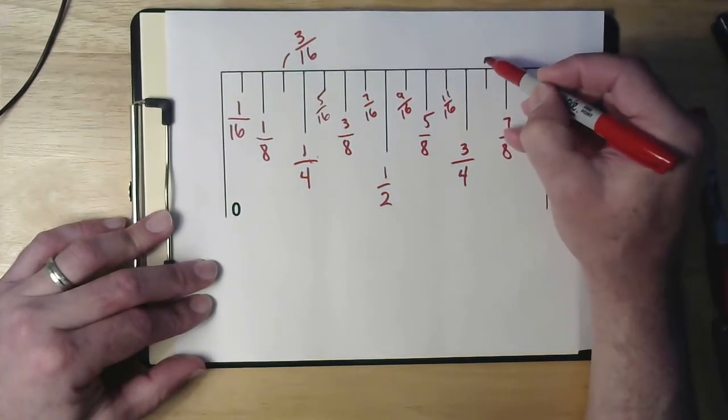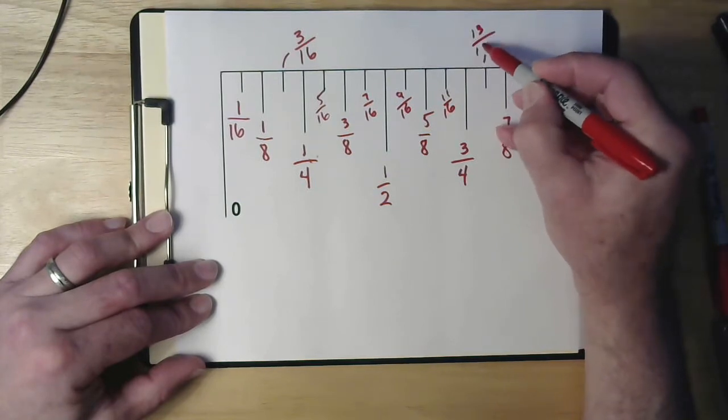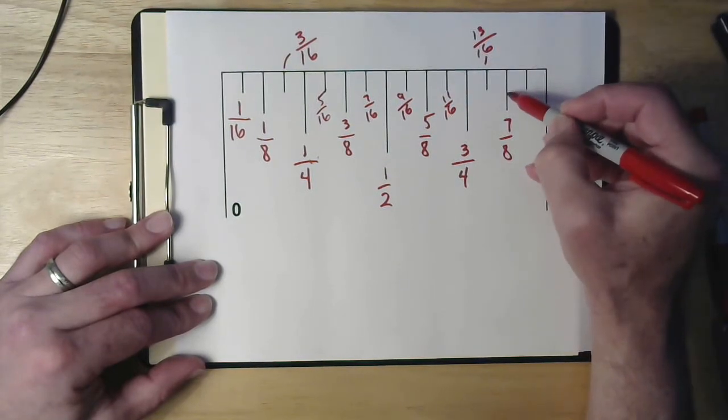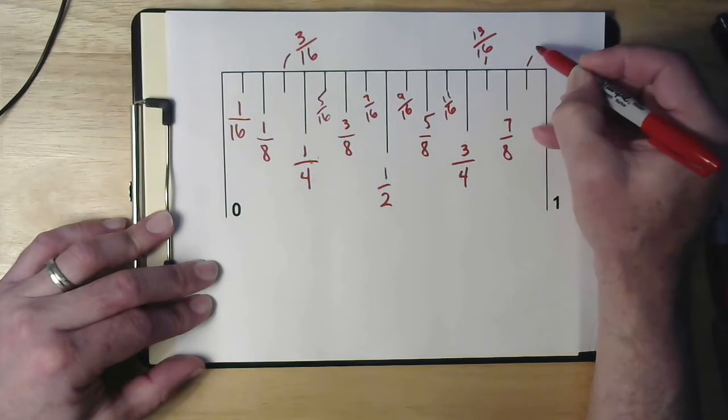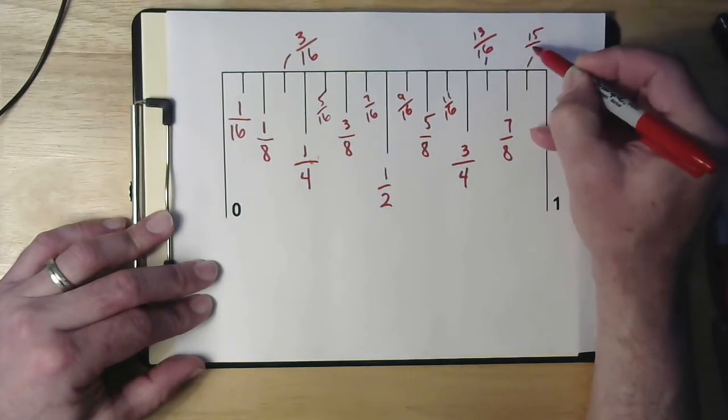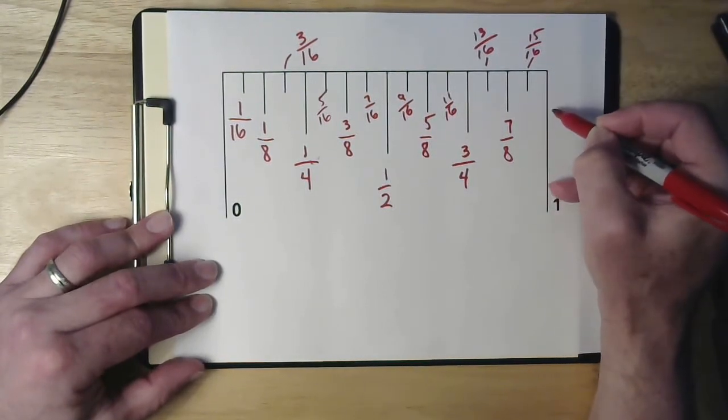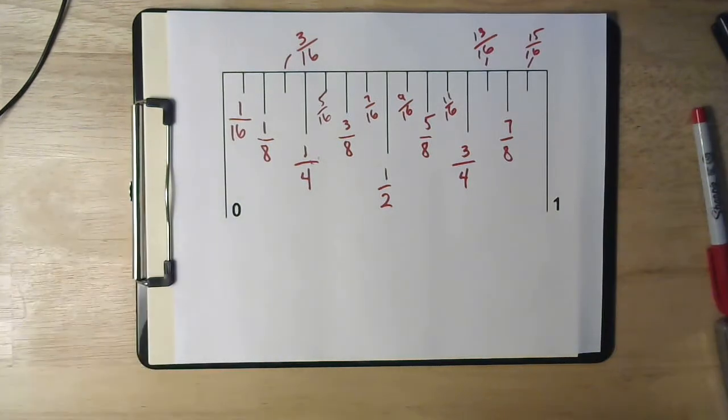This one here is 13 sixteenths, 14 sixteenths, and then this one is 15 sixteenths. And then at one, we're back to 16 sixteenths.